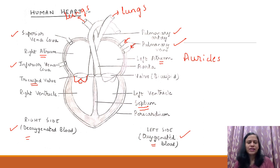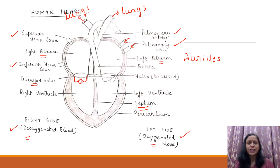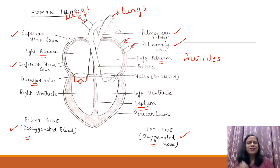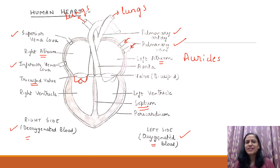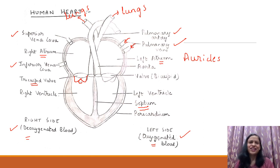Normally we say arteries carry oxygenated blood and veins carry deoxygenated blood. But here you can see the difference — the pulmonary artery carries deoxygenated blood and the pulmonary veins carry oxygenated blood. So there is a new definition to remember: arteries are vessels which carry blood away from the heart to other organs, and veins are vessels which bring blood from other organs back to the heart.